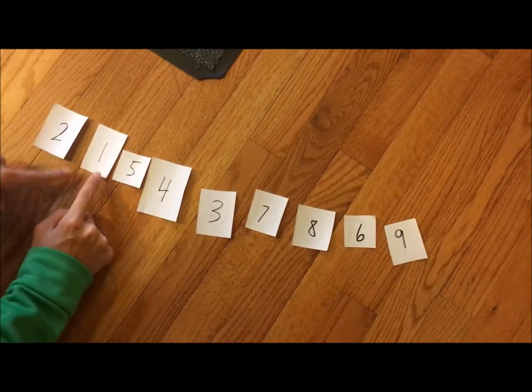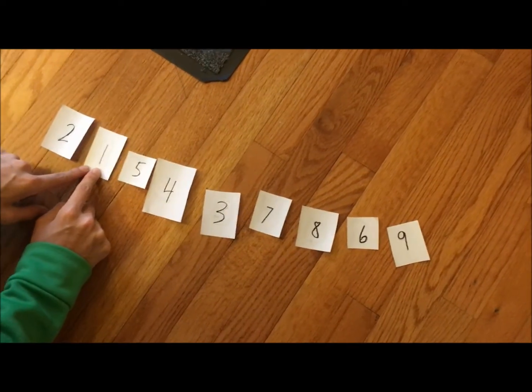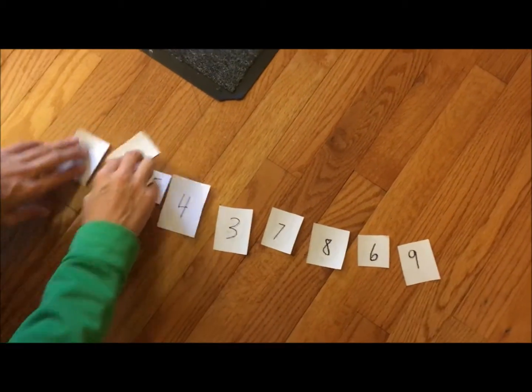Two is the smallest number, but then you go on to the next one and one is the smallest. Then nothing else is smaller than one, so we'll put one first.